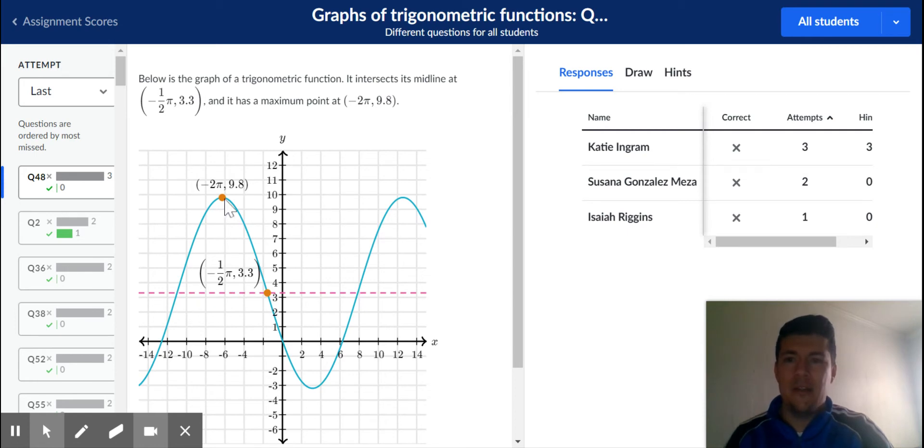Starting again from midline to peak, from peak back to midline, from midline to the bottom peak, and from the minimum back to the midline. So four parts.